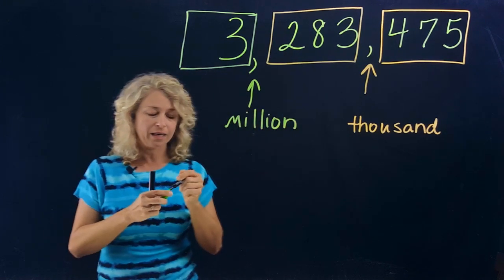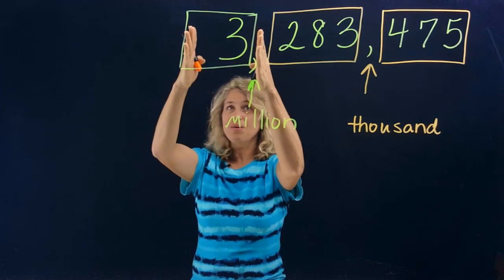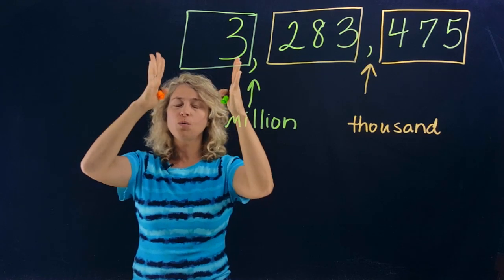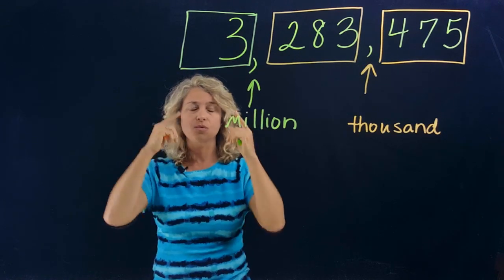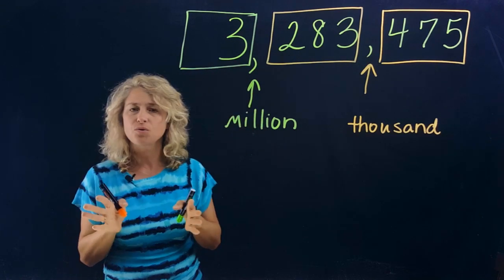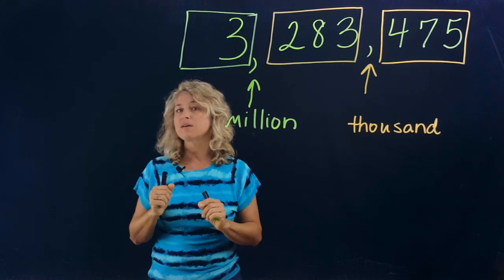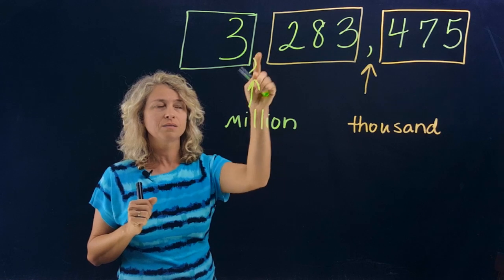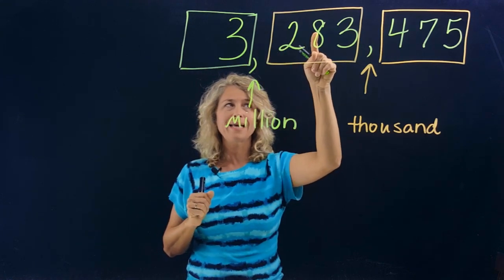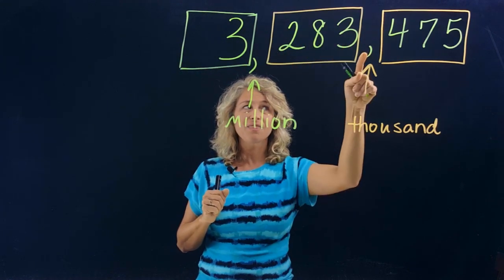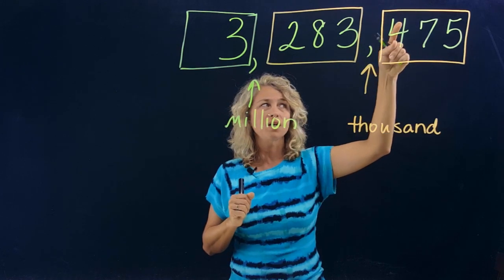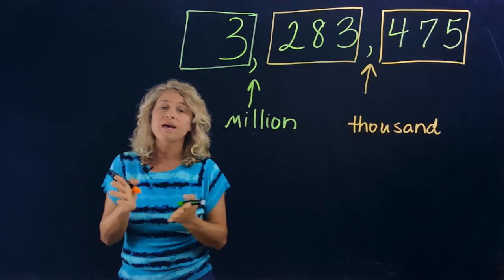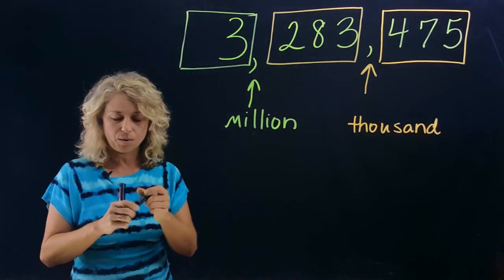All right, so can you say this number? Three, right? Okay, so that's easy. So if you will break these numbers down and remember the boxes, even when they're not there, you will not fail. Three million, two hundred eighty-three thousand, four hundred seventy-five. And we said this big number without any problems.